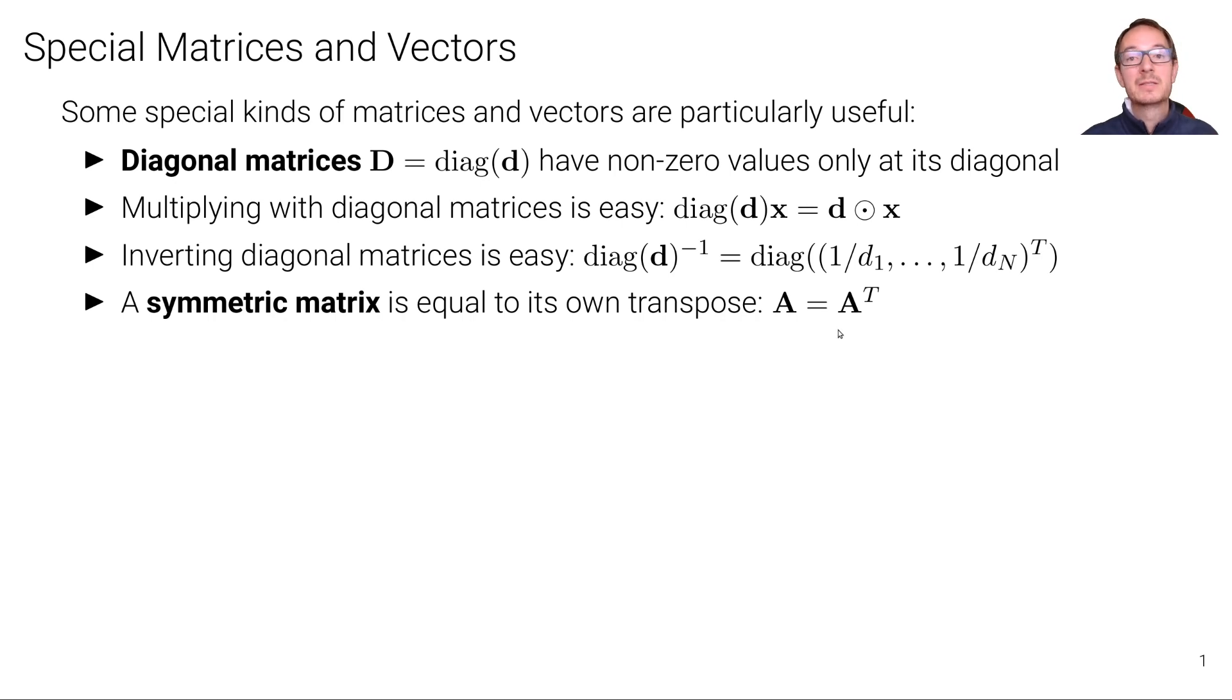This means that all the elements in its upper triangle have corresponding elements in its lower triangle. All the elements above the diagonal are corresponding to elements below the diagonal.